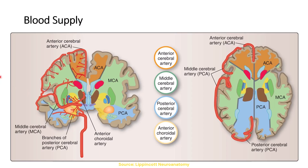The blood supply involves different blood vessels. Here you can see the vertebral artery, which becomes the basilar artery, and this is the posterior cerebral artery supplying different parts of the basal ganglia. The posterior cerebral artery, to be more specific, supplies the subthalamic nucleus, substantia nigra, and part of the thalamus.